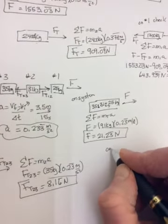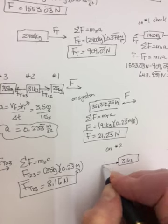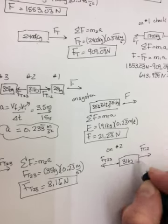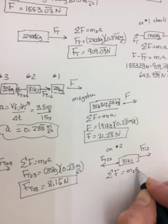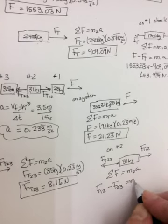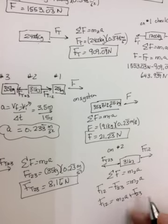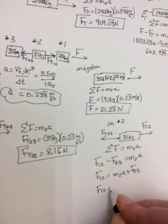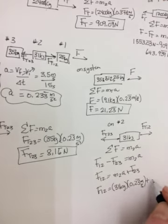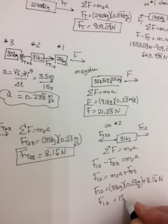Okay. Now you can look at number two. So on number two, we have the force we just, 31 kilograms. We have the force that we just found pulling back FT2-3, and the force that we're looking for FT1-2 pulling forward. Sum of the forces is equal to M2A. Forward is positive. So F1-2 minus F2-3 is equal to M2A. So 1-2 should be M2A plus 2-3. M2 is 31 kilograms times the 0.23 repeating plus the 8.16 repeating newtons. And you should get a 1 to 2 of 15.4 newtons.